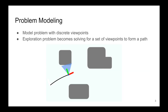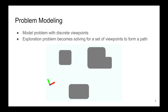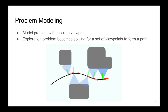We model the exploration problem with discrete viewpoints. Solving the problem requires finding the shortest path that passes through a sequence of viewpoints. After following the path and visiting all the viewpoints, the robot should be able to build a complete map of the environment with its onboard sensors.